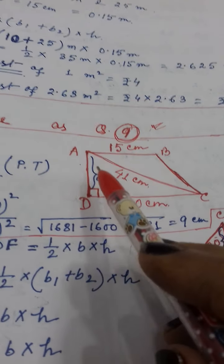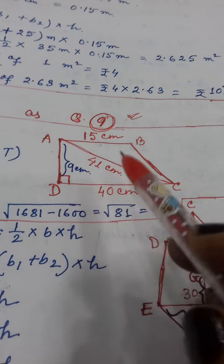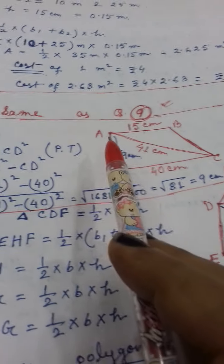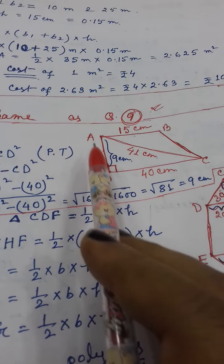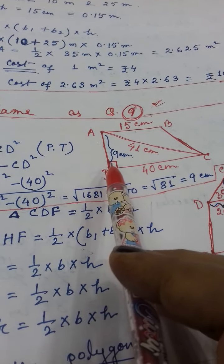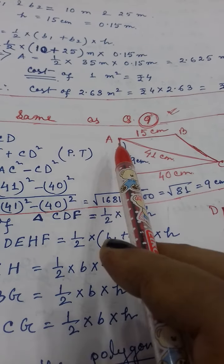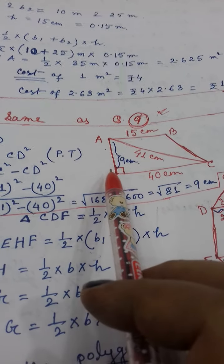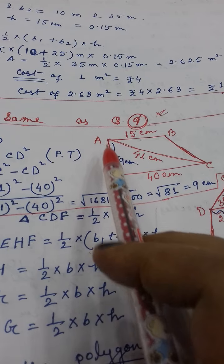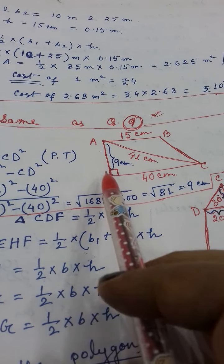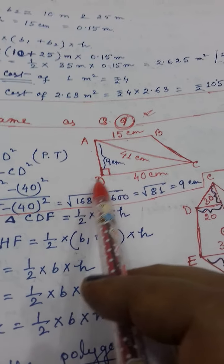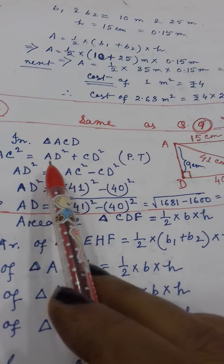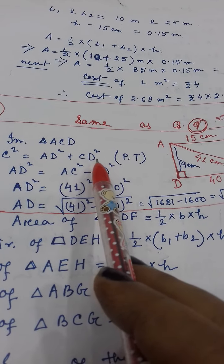Now see here this figure. In triangle ACD, this is a right angle triangle because the angle is 90 degrees. Now in this right angle triangle, what you have to find out is from the Pythagoras theorem — you have to find out AD, the perpendicular. AC is the hypotenuse, DC is the base. So with the Pythagoras formula: AC squared equals AD squared plus CD squared. That is the main formula.